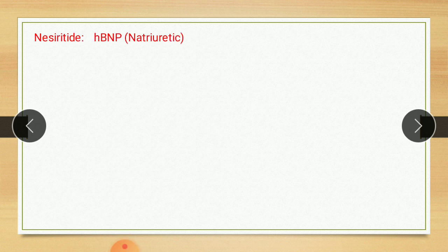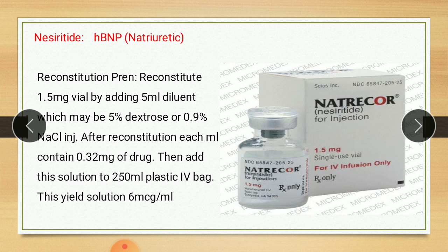Now the other drugs used as cardiotonics, which are not glycosides. The first one is Nesiritide, also called HBNP, that is human B-type natriuretic peptide. It is manufactured from E. coli using recombinant DNA technology. It has 32 amino acids. It is formulated as a citrate salt and provided in a sterile single-use vial; each 1.5 mg vial contains white lyophilized powder for intravenous administration after reconstitution. Nesiritide acts as a natriuretic, meaning it increases sodium excretion through the urine.